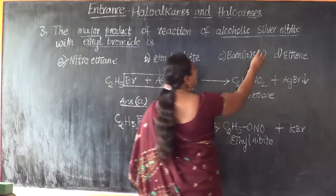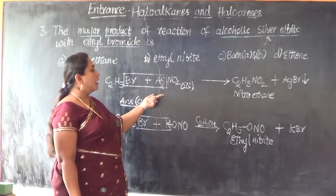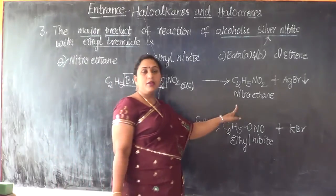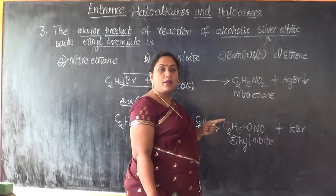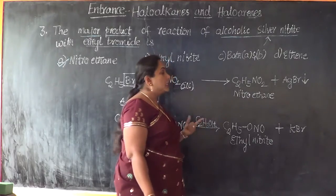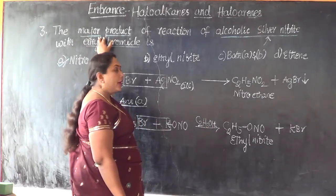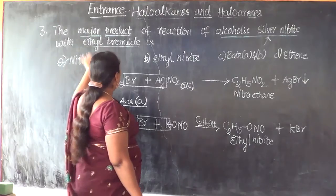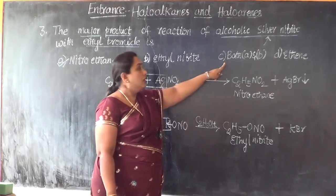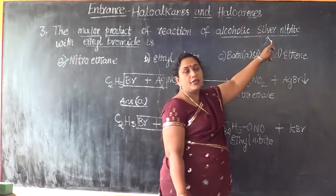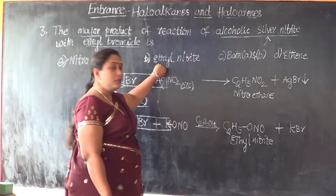Because the question has ethanolic silver nitrite as one of the reactants, ethyl bromide gives nitroethane as the major product. In this reaction we also get ethyl nitrite but in small percentage — as a minor product. Because the question asks for the major product, the correct answer is nitroethane. Had the question asked for all products formed, the answer would include both. And if the reactant were alcoholic potassium nitrite instead, then ethyl nitrite would be the major product.